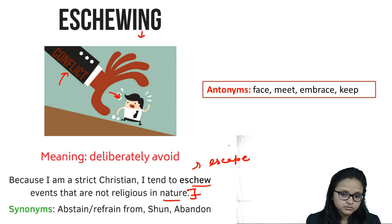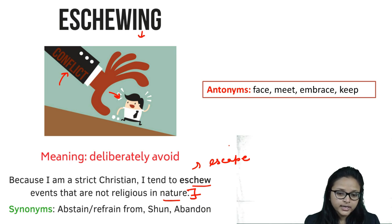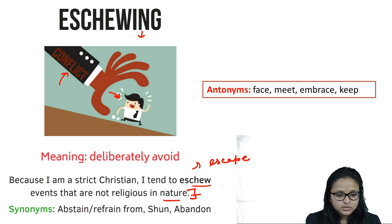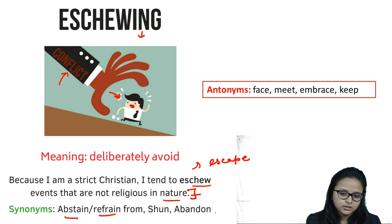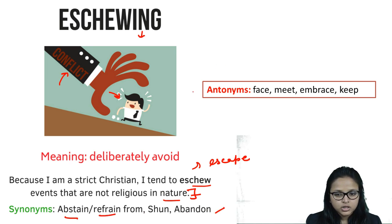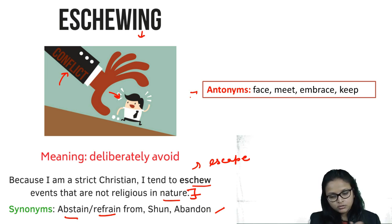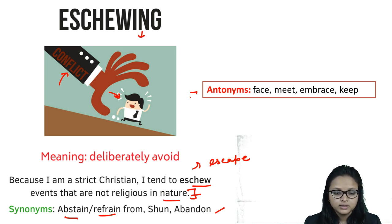Synonyms for 'eschew': abstain from, refrain from, shun, abandon. Antonyms: face, meet, embrace, accept, keep. If you are avoiding something, the opposite is to face it or accept it.